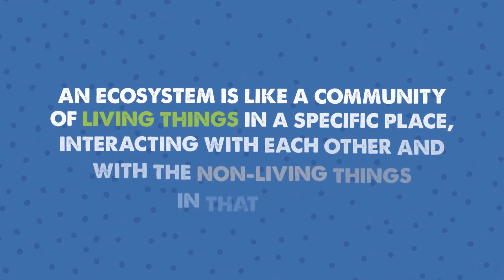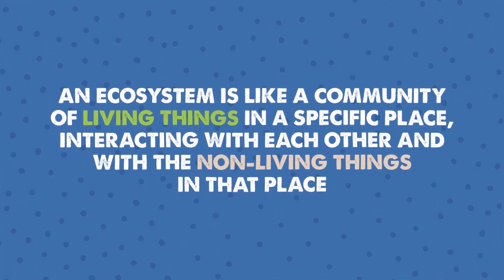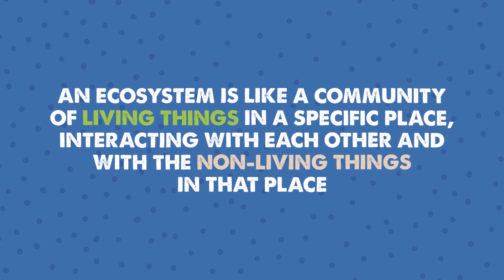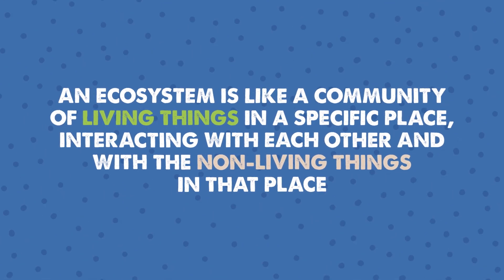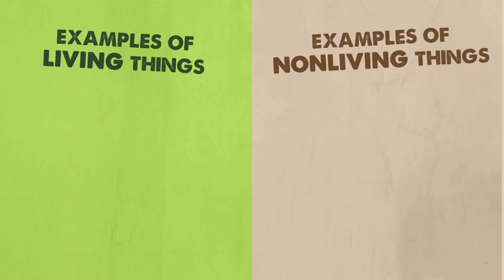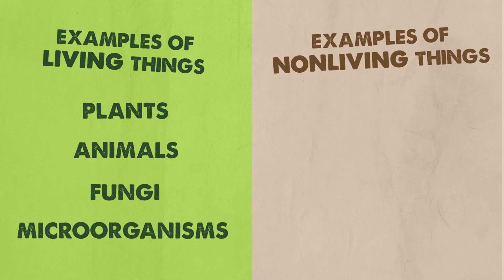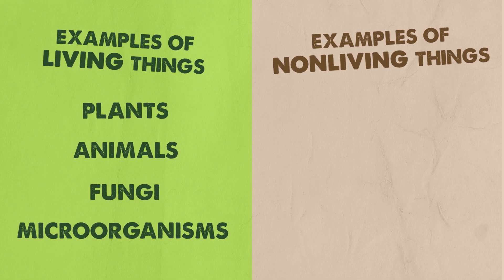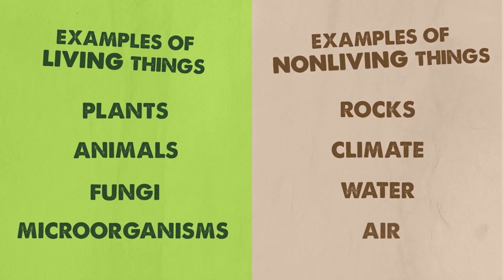An ecosystem is like a community of living things in a specific place, interacting with each other and with the non-living things in that place. Examples of living things are plants, animals, fungi, and microorganisms called monera and protista. Non-living things are things like rocks, climate, water, and air.